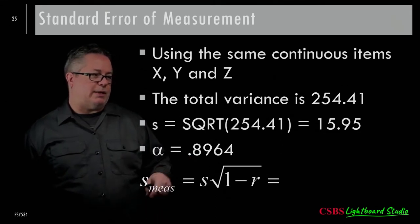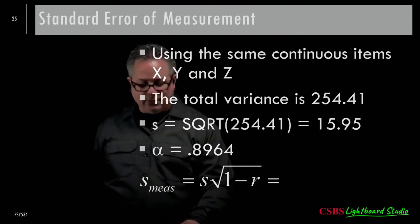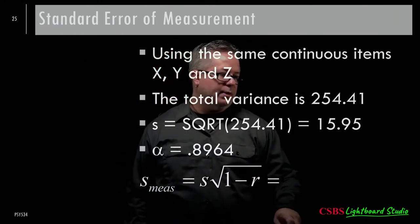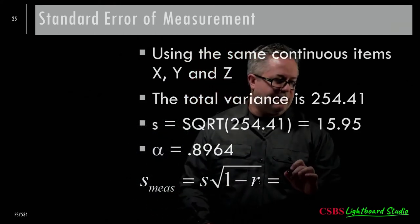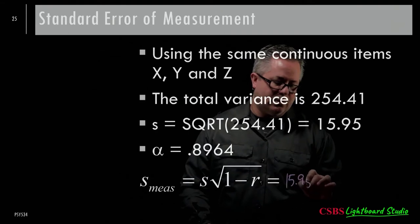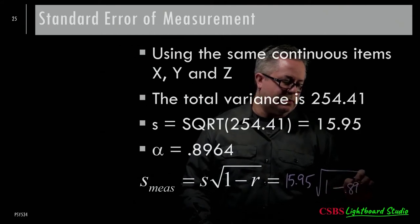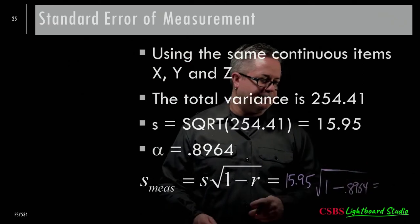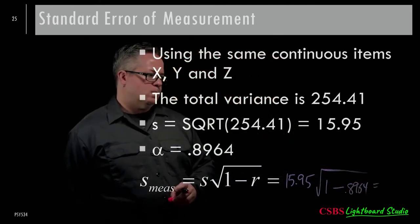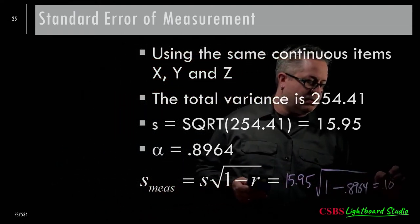We found that alpha was approximately 0.8964 from last time. So we can now compute the standard error of measurement: take the standard deviation of 15.95 and multiply it by the square root of one minus 0.8964, which gives us 0.1036 inside the square root.